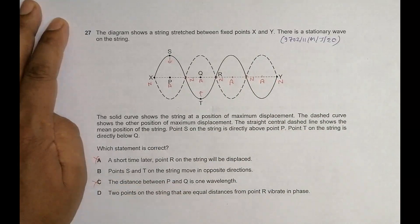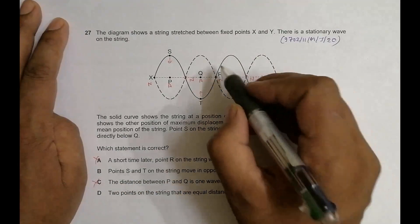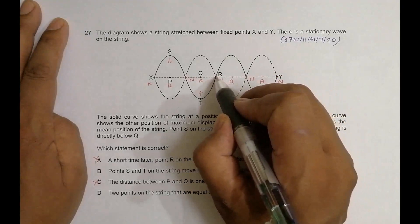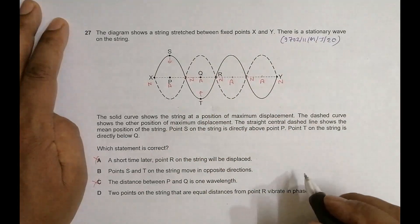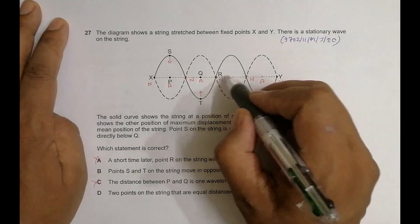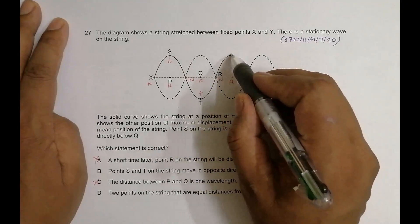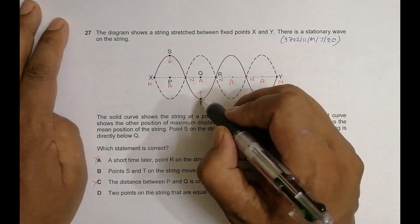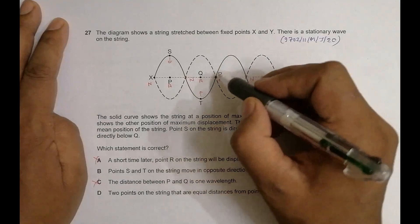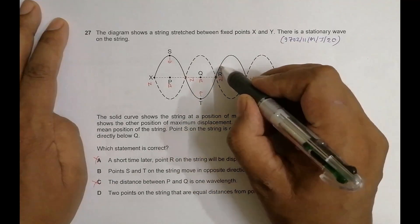Choice number D: two points on the string that are equidistant from point R vibrate in phase. So two points which are equidistant - the point here and the point here. This is again untrue because the point here is right now here, the point here right now here. They are executing exactly opposite vibrations.